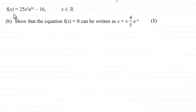Hi, now for this question we've got f(x) = 25x²e^(2x) - 16, where x is any real number. We're being asked to show that the equation f(x) = 0 can be written as x = ±(4/5)e^(-x) for one mark.